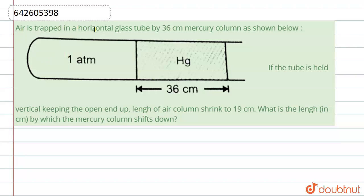Air is trapped in a horizontal glass tube by 36 centimeter mercury column as shown below. If the tube is held vertically keeping the open end up, length of air column shrink to 19 centimeter. What is the length by which the mercury column shift down? So coming to our question, here it is the column of